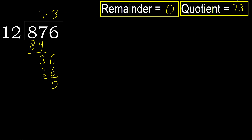Ok, remainder 0, therefore 876 divided by 12 is 73.